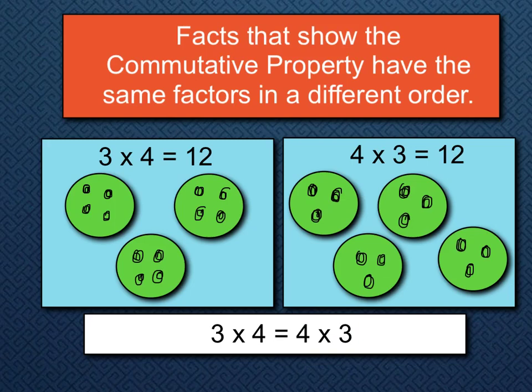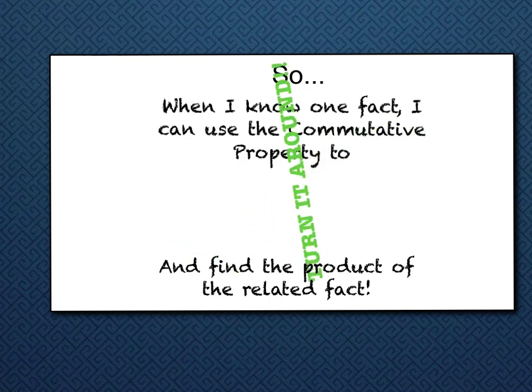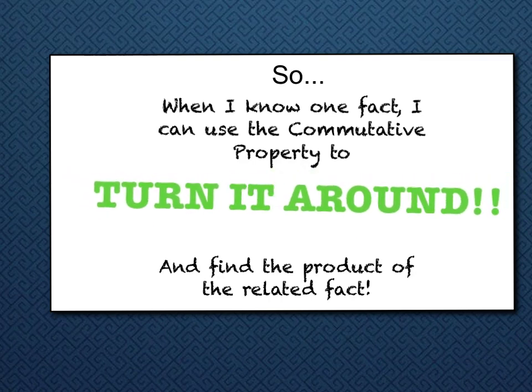So let's finish up and restate what we've learned today. When you know one multiplication fact, you can use the commutative property to turn it around and find the product of the related fact. Remember our little song — sing it to yourself. If you know one multiplication fact, you can turn it around, switch the factors, and you'll still get the same product. And that's our lesson for today.